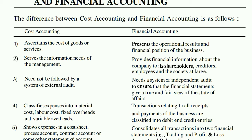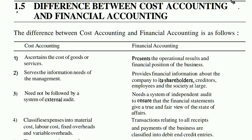So the information in financial accounting is for management, shareholders, creditors, employees, and society at large. But cost accounting is not like that — the knowledge of cost accounting is only for management, because if you tell the consumer the cost details, trade secrets will be exposed. So cost accounting is for management only, while financial accounting is for management, shareholders, creditors, employees, and society at large.